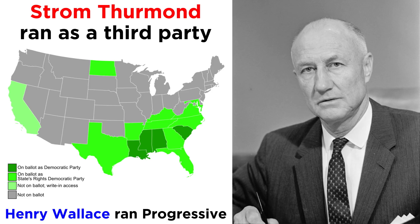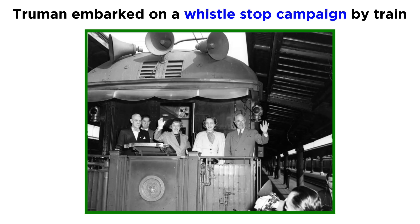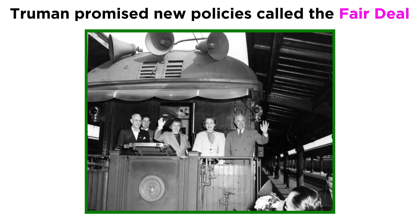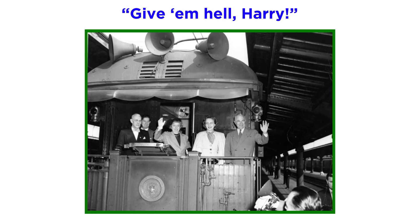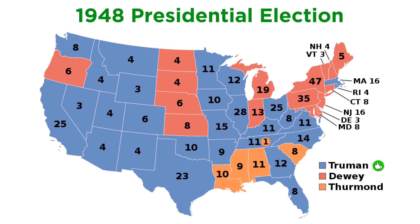Truman and Vice Presidential pick Alben Barkley, faced with a three-way split among the Democrats, were given little chance in the upcoming election to beat the popular GOP nominee, New York Governor Thomas E. Dewey. Truman embarked on an ambitious whistle-stop campaign, crisscrossing the country by train, railing against the obstruction of the Republicans, and promising a new suite of policies dubbed the Fair Deal, to succeed and extend FDR's New Deal. "Give 'em hell, Harry" became the unofficial motto as Truman would stop in a town, appear on the caboose, and give a rousing speech denouncing the Republicans, then roll down the tracks to another town and repeat the performance. Yet the mainstream press was so certain he would lose that the Chicago Tribune printed its infamous headline, "Dewey Defeats Truman," before the votes had even been fully counted. Truman's victory remains the most stunning comeback in American political history.